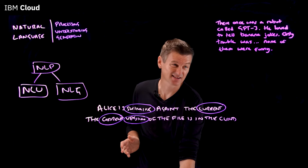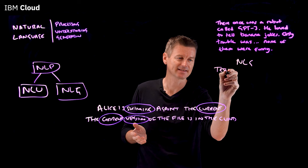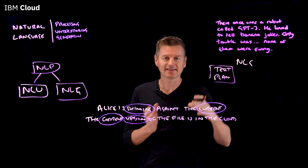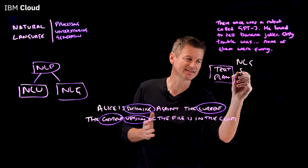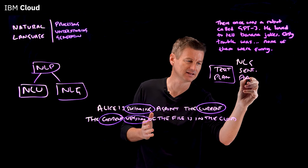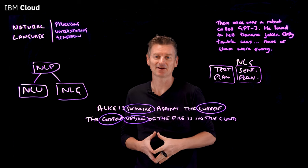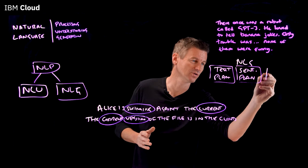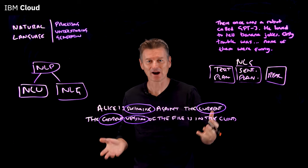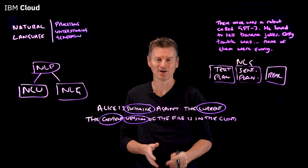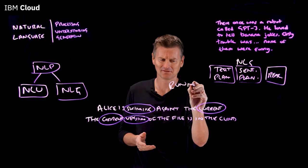NLG typically consists of three stages. The first stage is text planning, which formulates the order and content in a logical manner. Similarly, sentence planning considers things like punctuation and text flow, and breaks content into paragraphs and sentences. The third stage is called realization, which ensures we're playing by the rules of grammar — for example, knowing that the past tense of "run" is "ran" and not "runned."